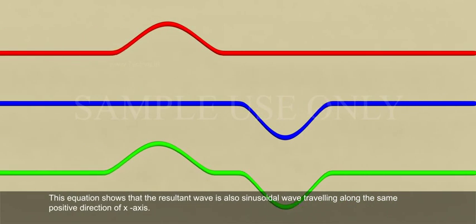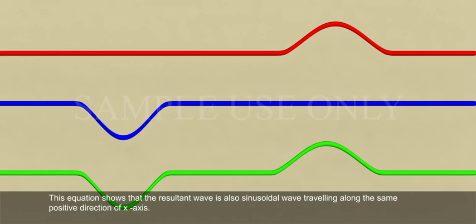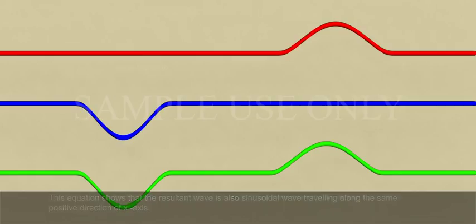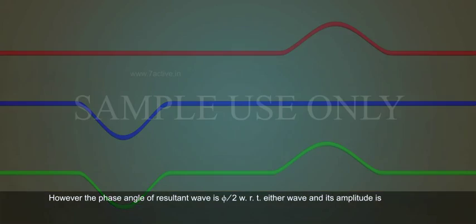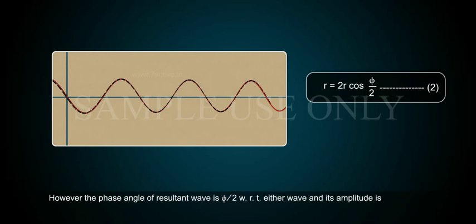Equation 1. This equation shows that the resultant wave is also a sinusoidal wave travelling along the same positive direction of the x-axis. However, the phase angle of the resultant wave is φ/2 with respect to either wave, and its amplitude is R = 2r·cos(φ/2). — Equation 2.